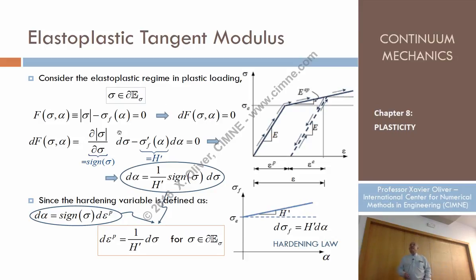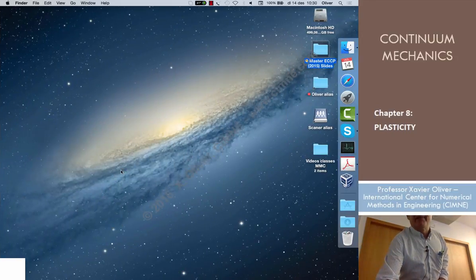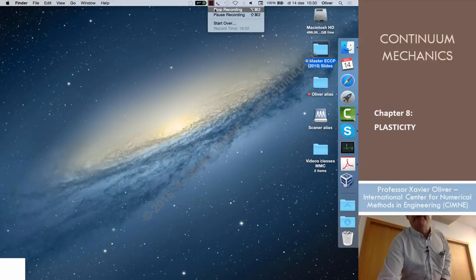Let's compute the differential of F. F is that, so we can compute the differential by the differentiation of the modulus of sigma with respect to sigma times the differential of sigma, minus the derivative of the yield stress with respect to alpha times the differential of alpha. Let's examine every one of these terms. What is the value of the differentiation of the modulus of something with respect to alpha? I'm going to explain to you because maybe that's a concept that you are not familiar with.